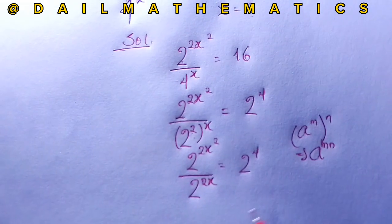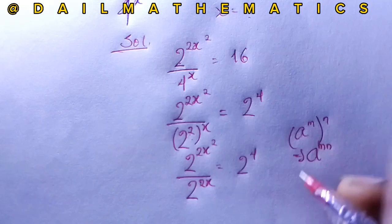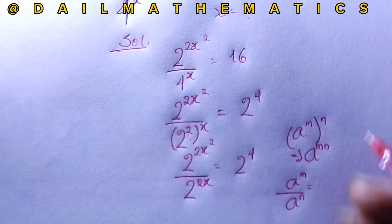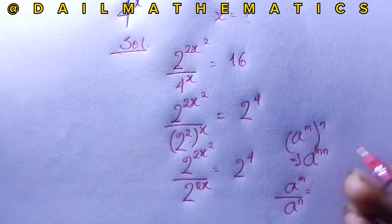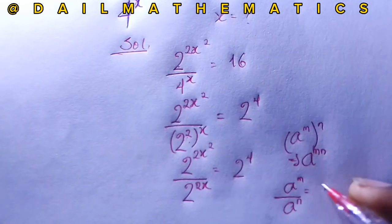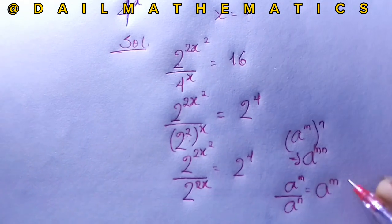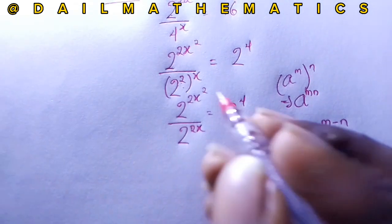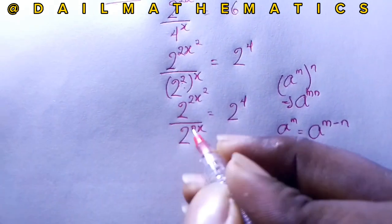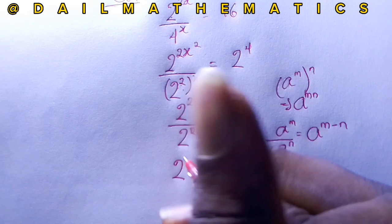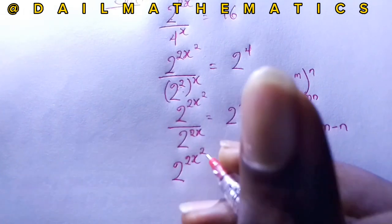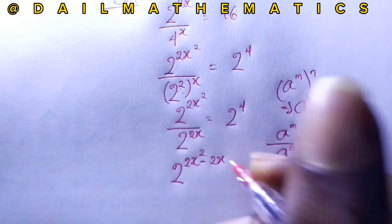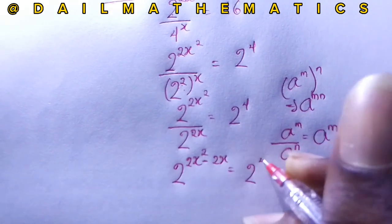When we have a^m over a^n, since the bases are the same, division changes the operation to subtraction: a^(m−n). Applying this here, we get 2 raised to the power of 2x squared minus 2x, equals 2 raised to the power of 4.